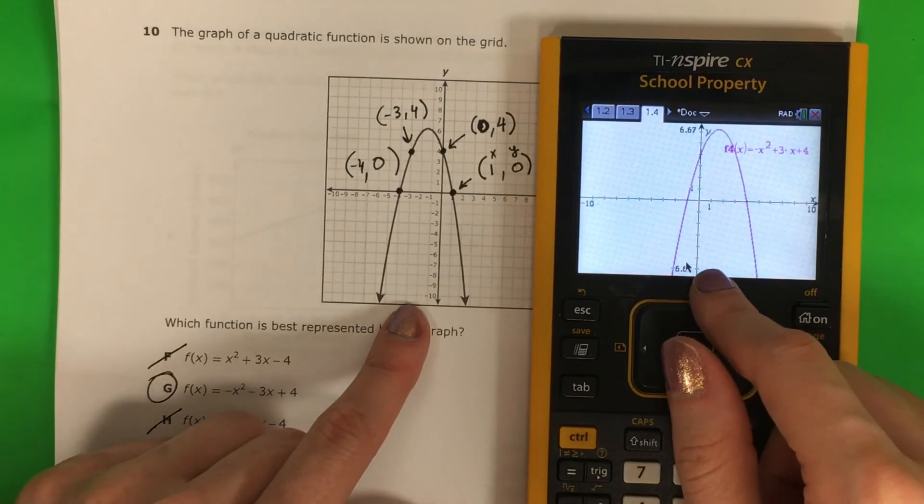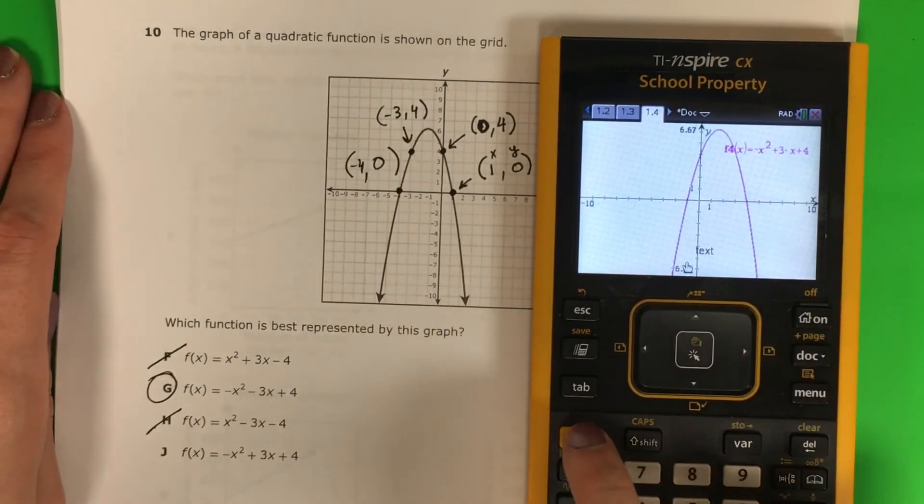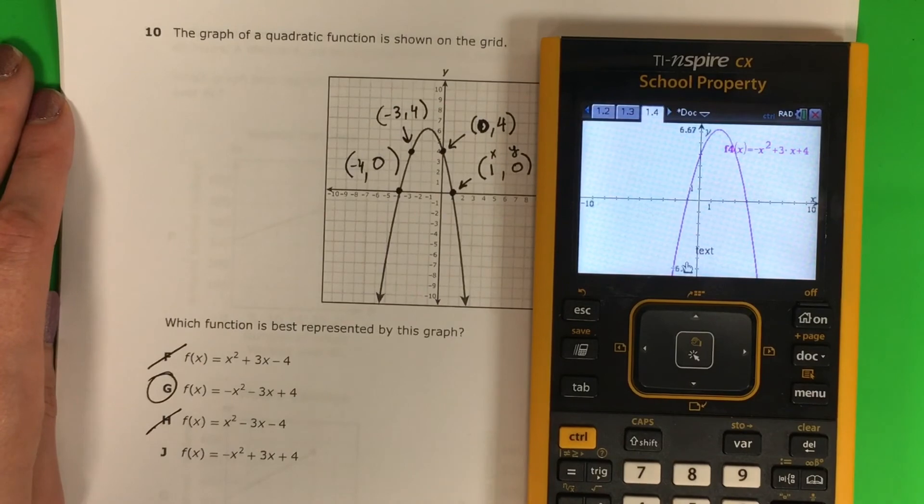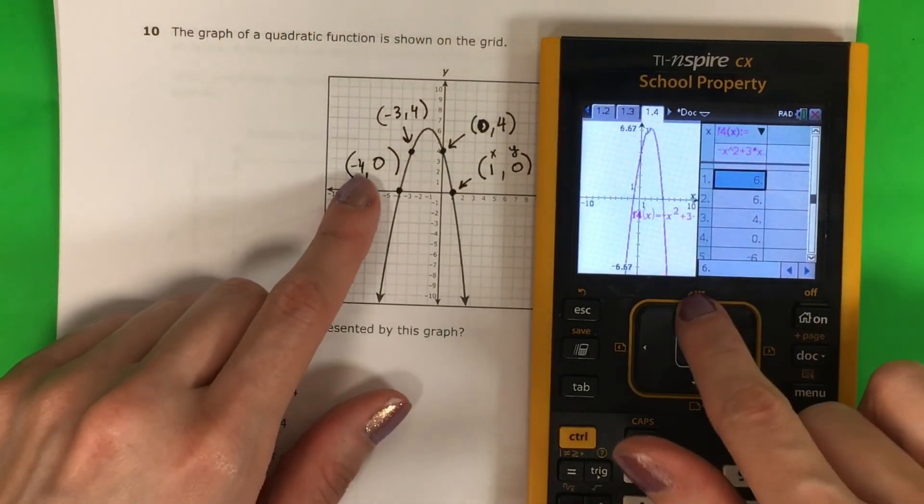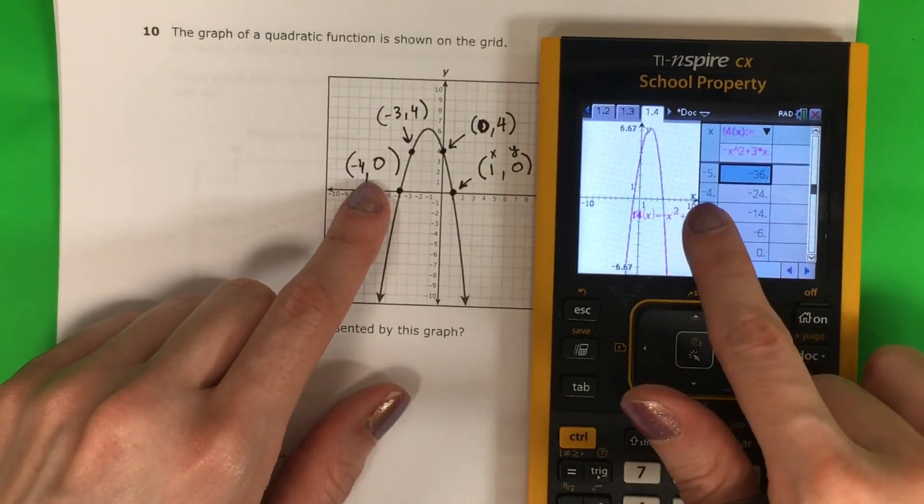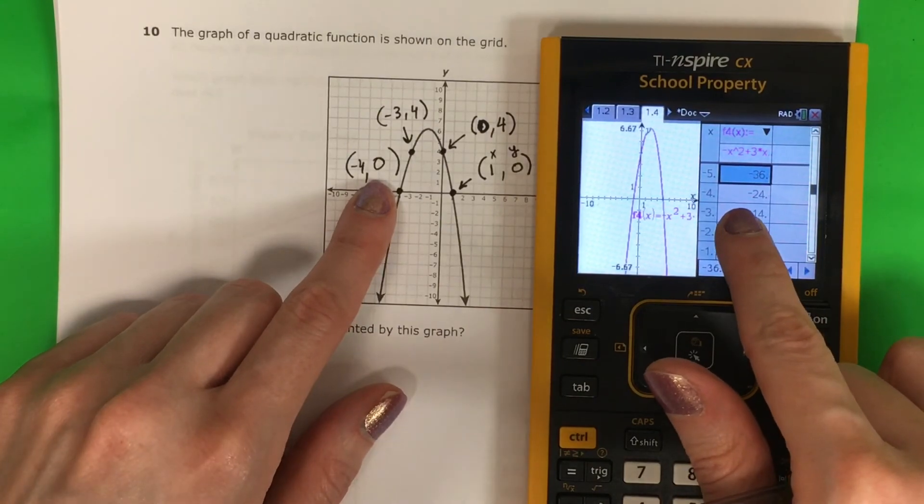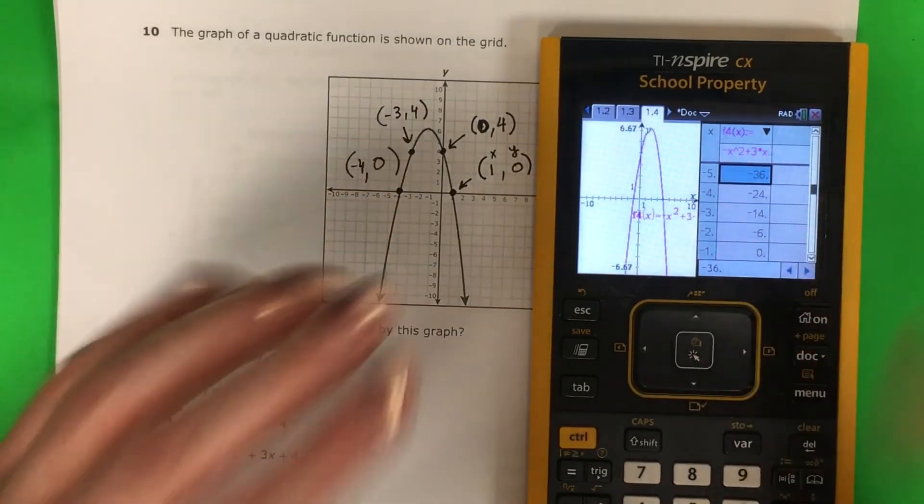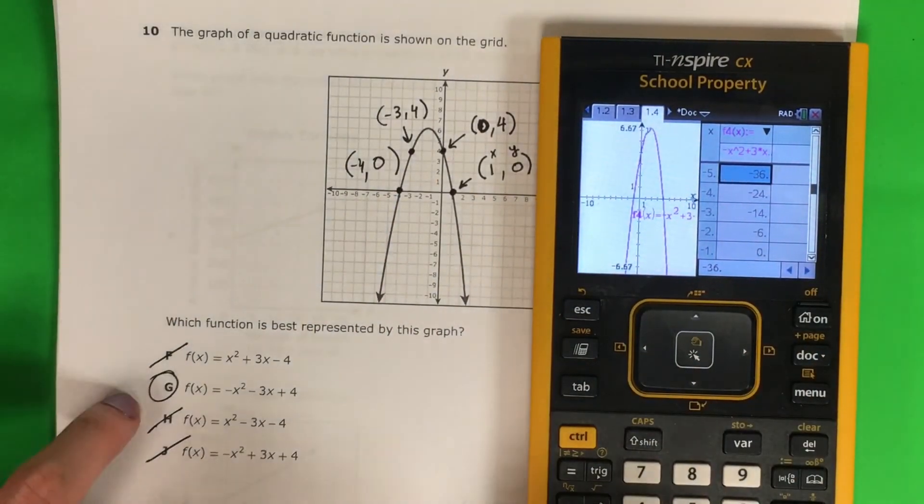OK, now that looks similar. Let's check the table. Ctrl, t. Go to negative 4. Negative 4, 0. No, it's different. This is negative 24. So this is not correct. So my answer is G.